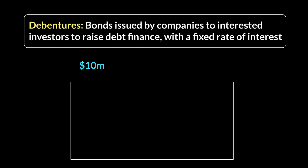Think about it — if that one investor with the entire $10 million decides to take all his money out, then the company needs to pay the entire amount right away. Compare that to $1 million divided between 10 people: even if two people withdraw their million dollars, you still have $8 million. So it's always advisable for a company to divide that amount into maybe 10 different portions of a million dollars worth each — in the form of a debenture.